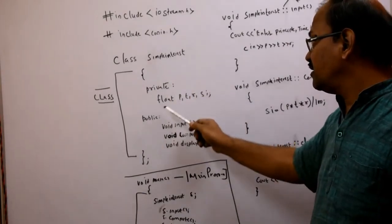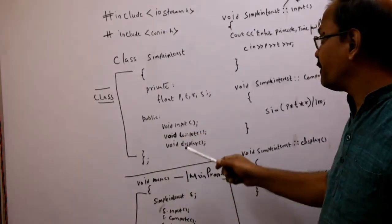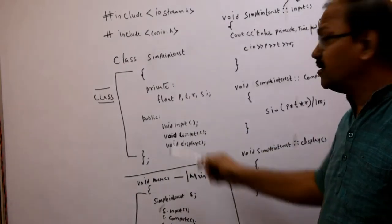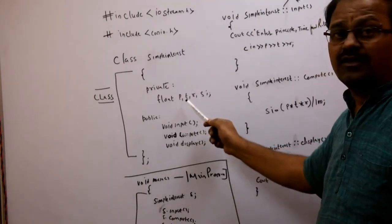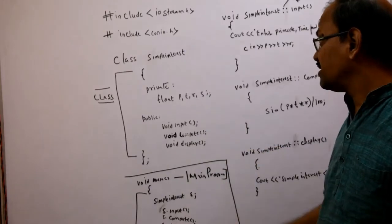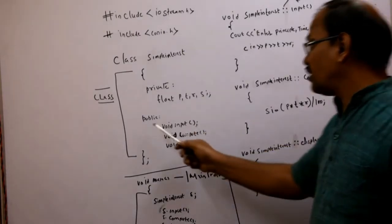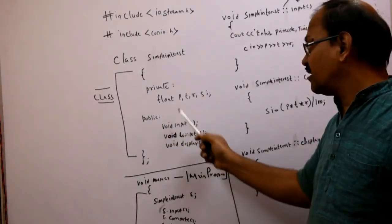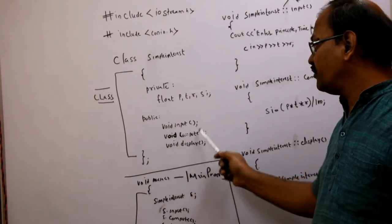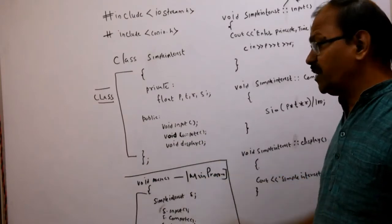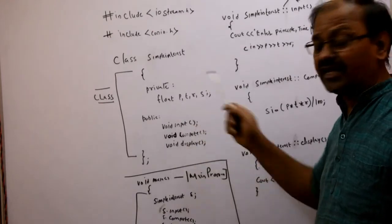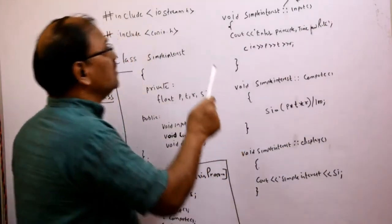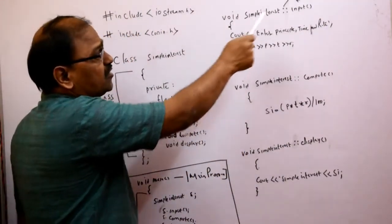These are private and public — these are the access specifiers. Under private, we have defined the data members: principle, time, rate, and simple interest, under the float data type. Under public, we have declared void input, void compute, void display — these are the three member functions.